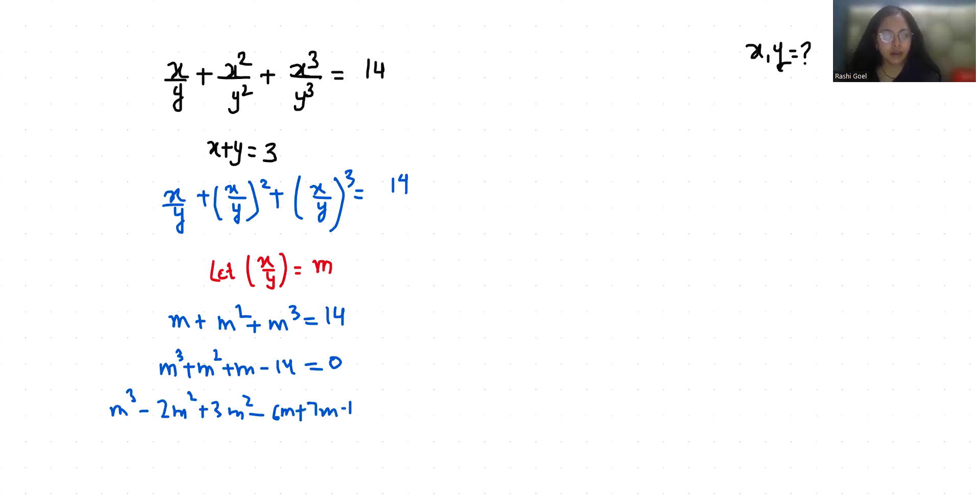I'll write it like this because from the first two terms I can take m square as common, so m minus 2. Similarly taking common factors, we get m minus 2 times m square plus 3m plus 7 equals 0.